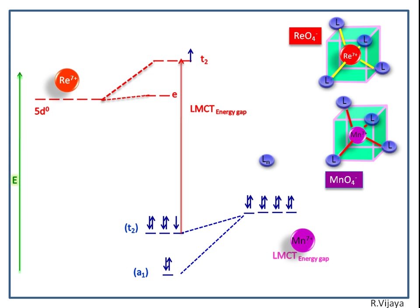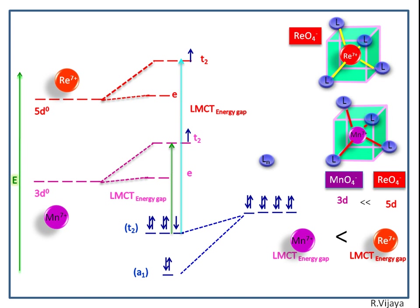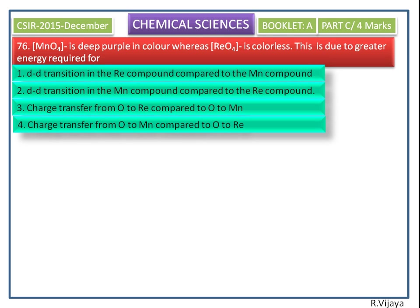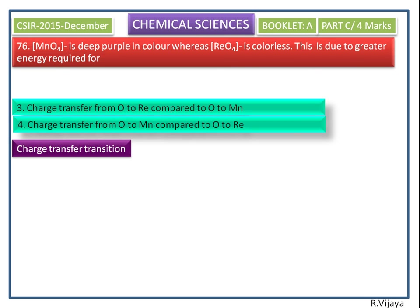Now we compare the LMCT energy gap between permanganate and perrhenate. The LMCT energy gap is higher in the case of perrhenate than permanganate because of the presence of the 5d orbital in perrhenate. But the electron transfer is more feasible in permanganate than perrhenate. In both complexes, the transition occurs by charge transfer, not d-d transition. So we remove the first and second options. The question asks: permanganate is deep purple in color whereas perrhenate is colorless — this is due to greater energy required for oxygen to rhenium compared to oxygen to manganese.